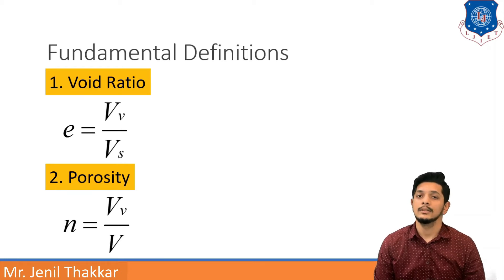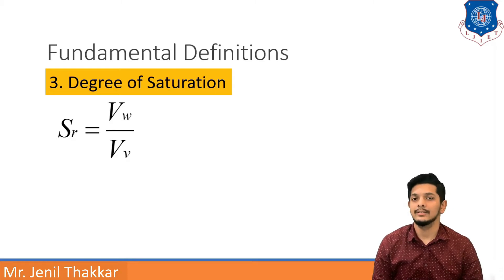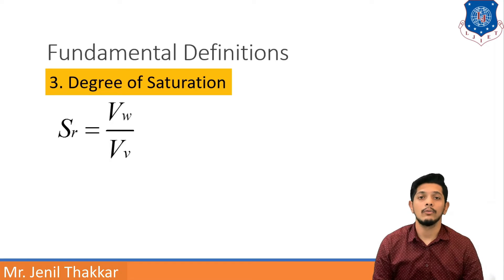Porosity can be minimum 0 and maximum 1. The third definition is Degree of Saturation. Degree of Saturation is denoted by capital S with suffix R, written as SR. SR is equal to VW upon VV. Degree of Saturation is defined as the ratio of Volume of Water to Volume of Voids.